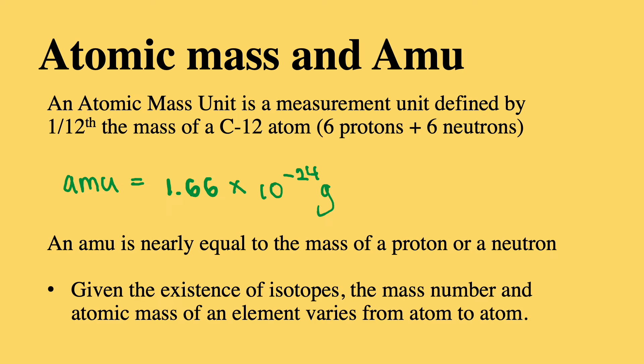For your information, an atomic mass unit is a measurement unit defined by one-twelfth of the mass of a carbon-12 atom. In other words, an atomic mass unit is equal to 1.66 × 10^-24 grams.